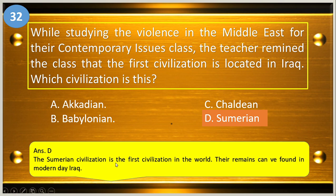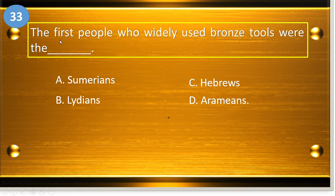The Sumerian civilization is the first civilization in the world. Their remains can be found in modern-day Iraq.